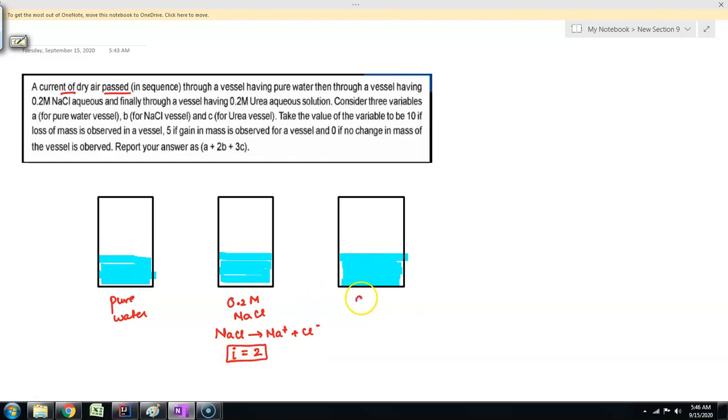The third vessel contains 0.2 molar urea. Urea is an organic molecule. It does not dissociate further, so the number of particles does not increase. So i is equal to 1.